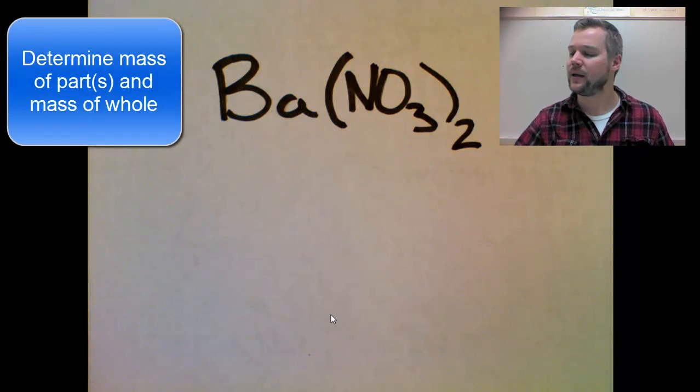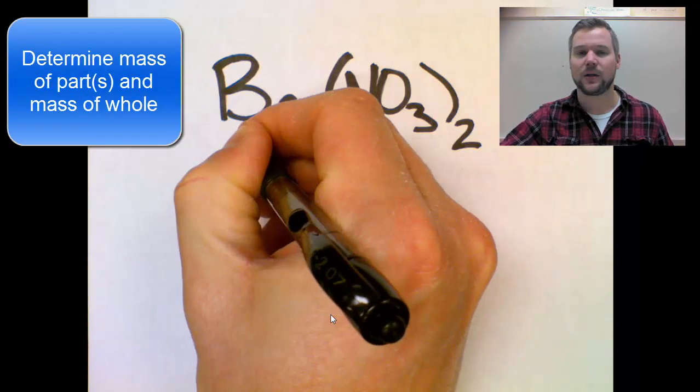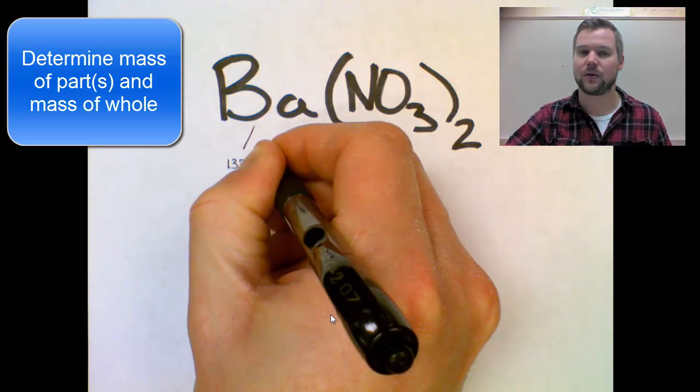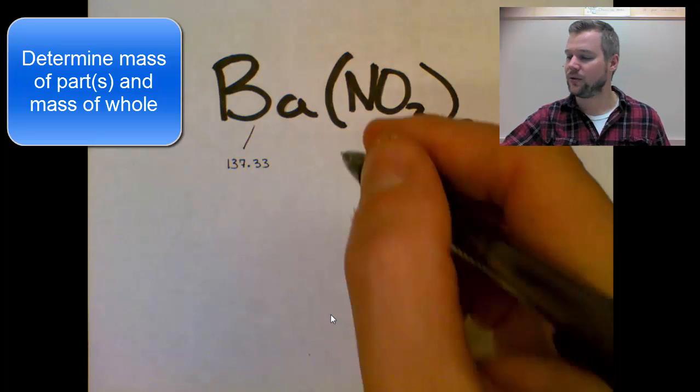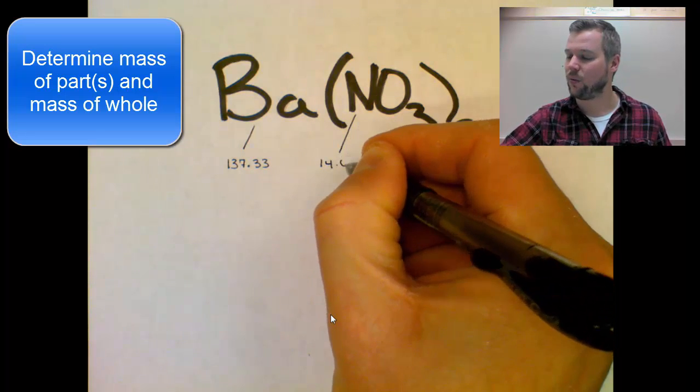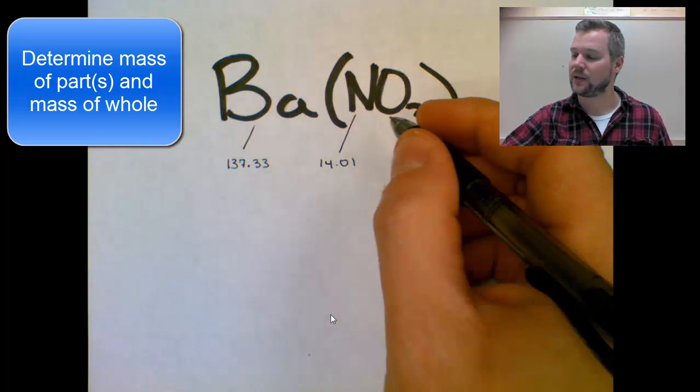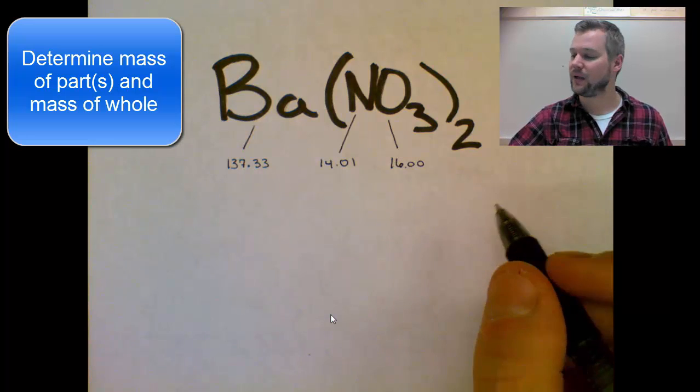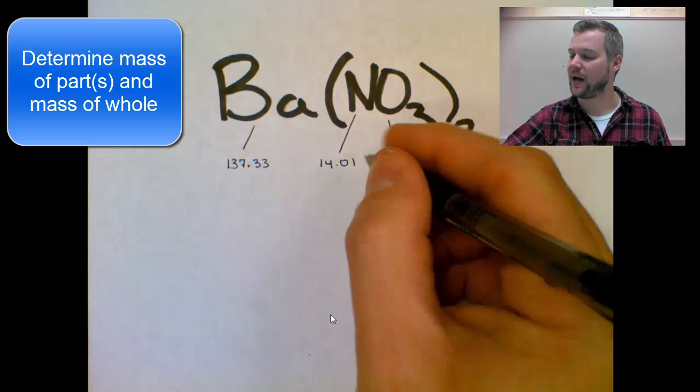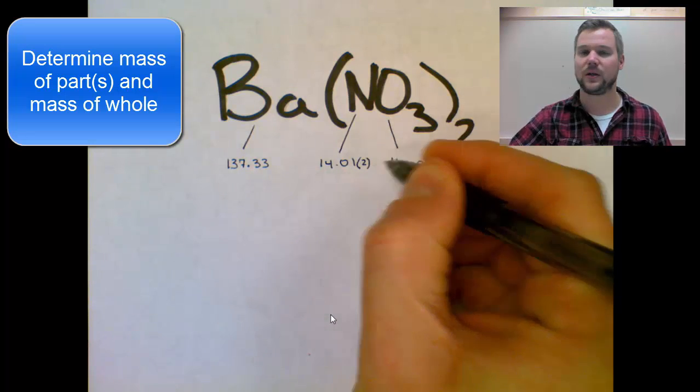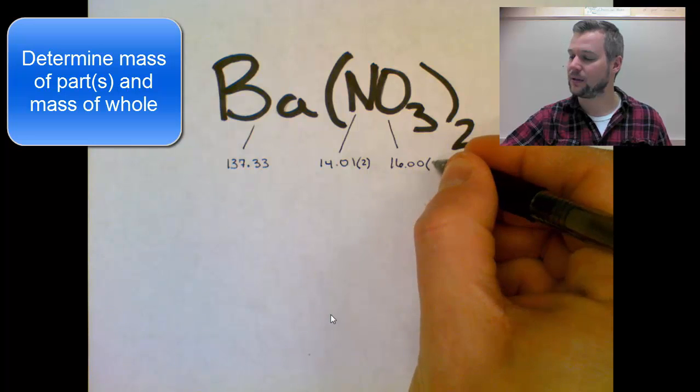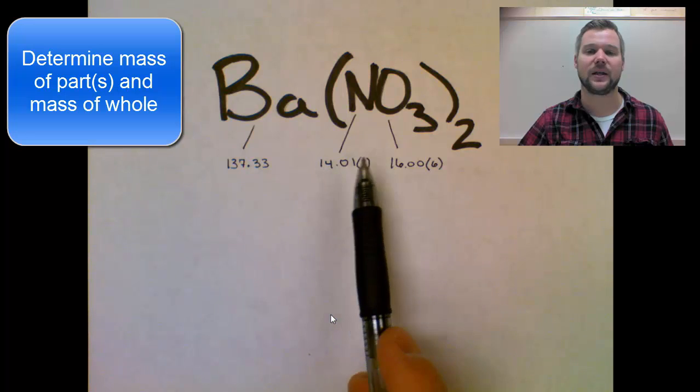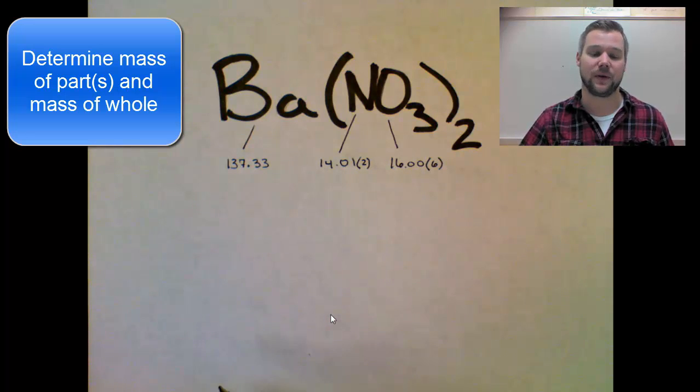So that looks something like this. For this compound, barium nitrate, I need to know the mass of each part. So barium weighs 137.33 grams per mole, nitrogen weighs 14.01 grams per mole, and oxygen weighs 16.00 grams per mole. Now because there's a subscript 2 on the outside of the parentheses, there's two copies of the 14.01, and there are six copies of the oxygen. These numbers are coming off my periodic table.